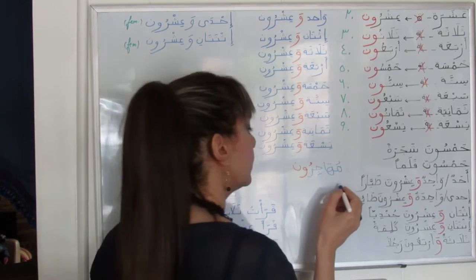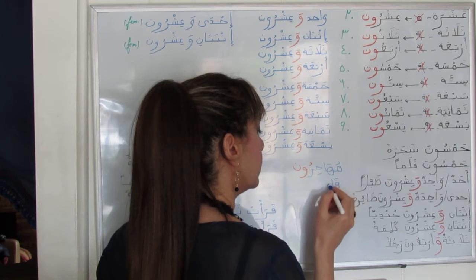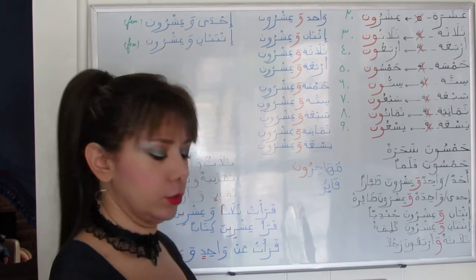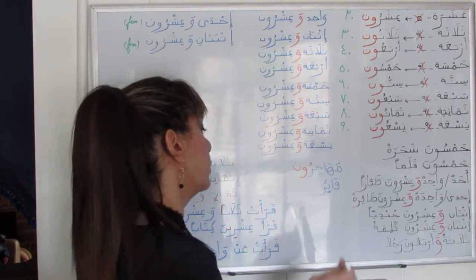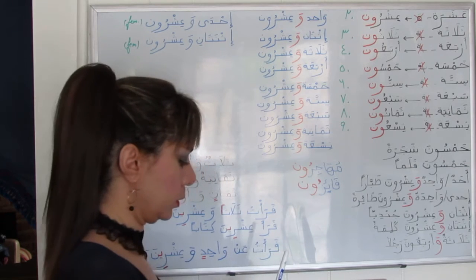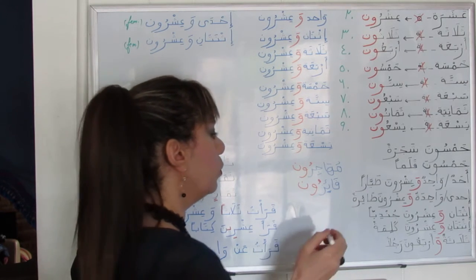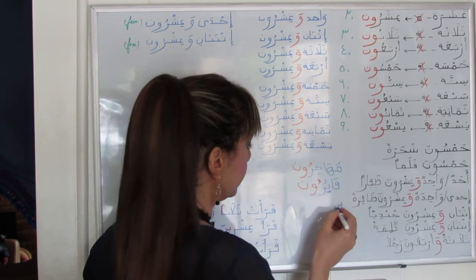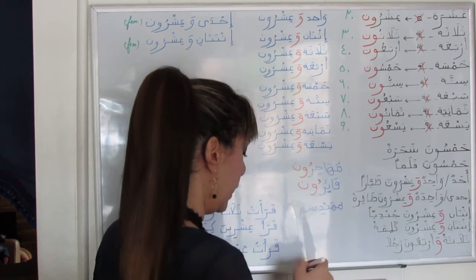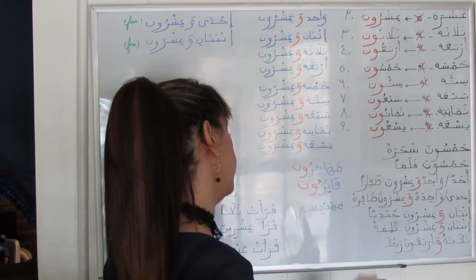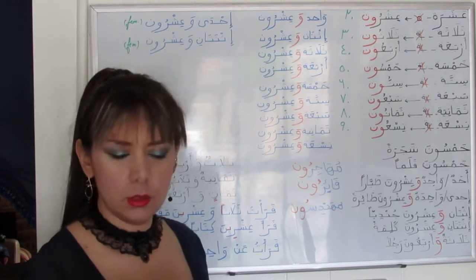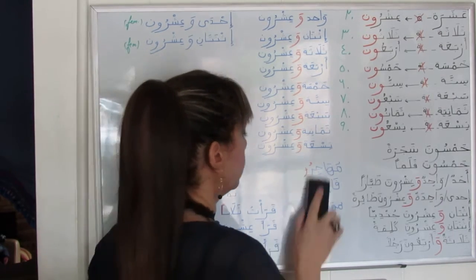فائز (victor), its plural is فائزون — the regular plural. Similarly, مهندس (engineer), its plural is مهندسون. So this is the pattern of the plural form using the ون suffix.